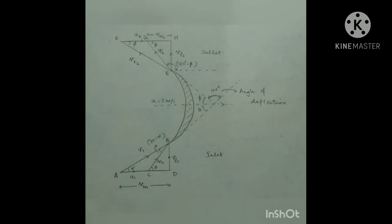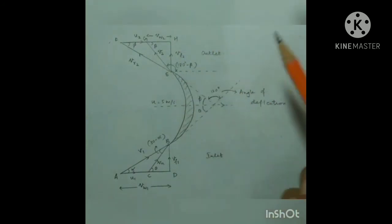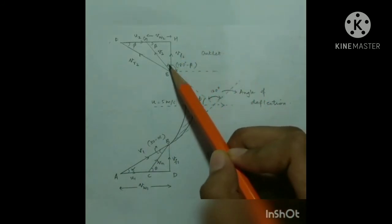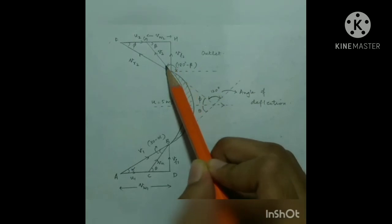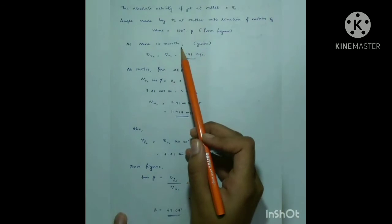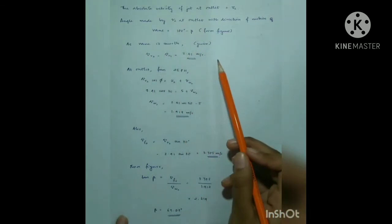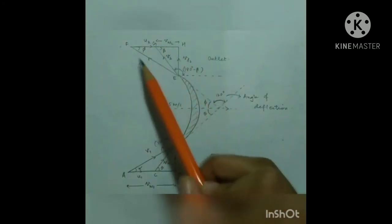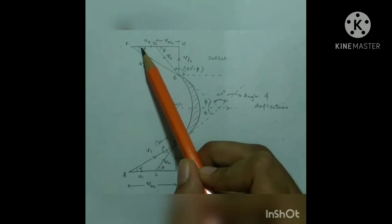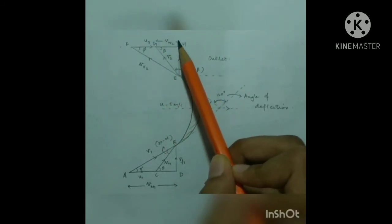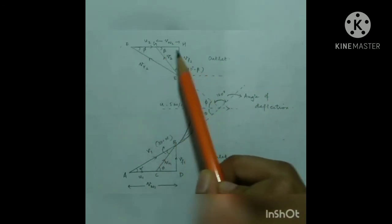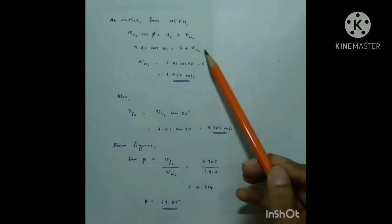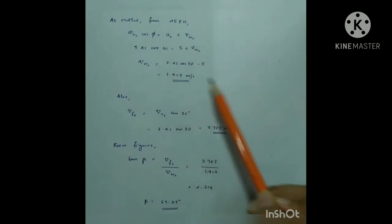To find the absolute velocity of the jet at the outlet V2, we consider the outlet figure. The angle made by V2 with the direction of motion of the vane is (180° − beta). Since the vane is smooth, Vr2 = Vr1 = 7.41 m/s. Considering triangle EFH: Vr2 × cos(phi) = U2 + Vw2. Substituting values for Vr2, phi, and U2, we find Vw2 = 1.417 m/s.